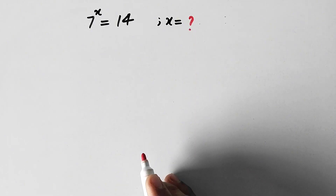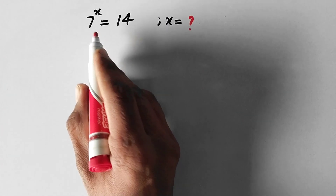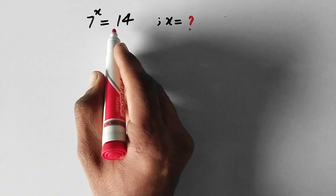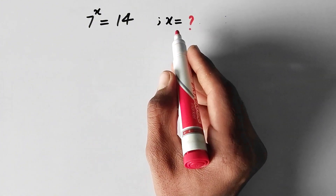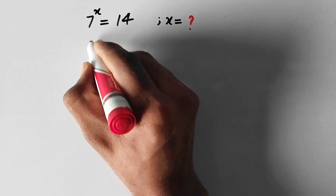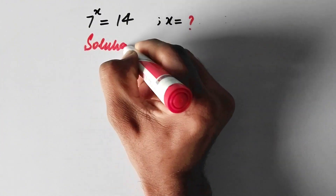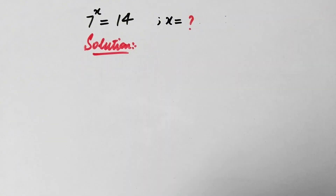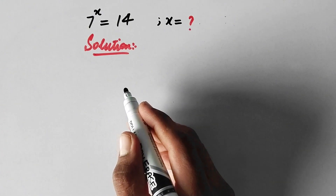Hello everyone and welcome to ExplodeMaths. In this video we are going to solve an exponential problem: 7 to the power x is equal to 14, and we have to find the value of x. So let us see its solution. We can solve this problem by two methods.